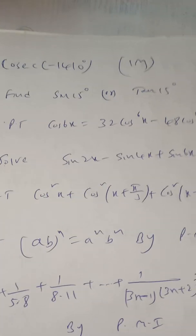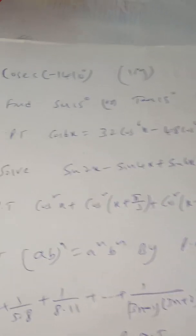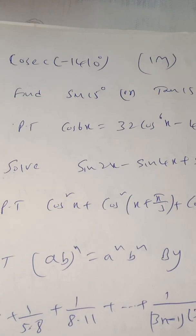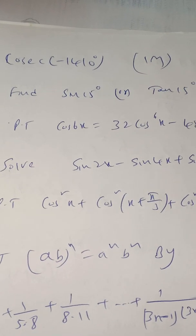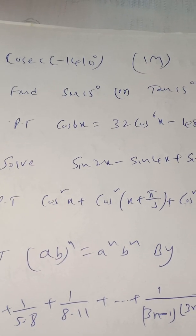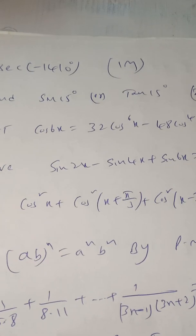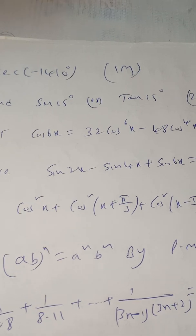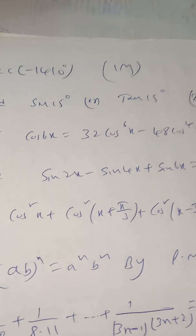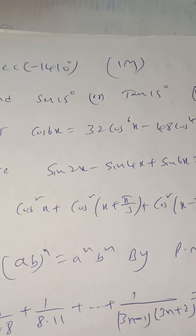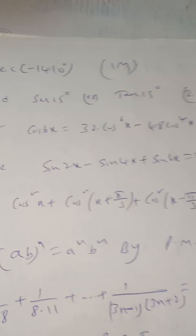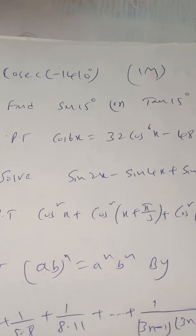For 2 marks in trigonometry: find sin 15° or tan 15°. Sin 15° means use sin(45° − 30°) with the sin A − B formula. Tan 15° means tan(45° − 30°). If they don't give 15°, they will give 75°, and then you use sin(45° + 30°) or tan(A + B) formula.